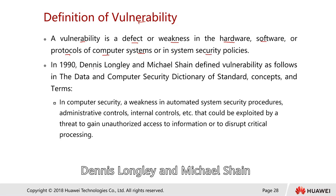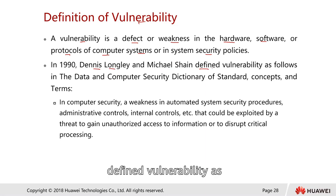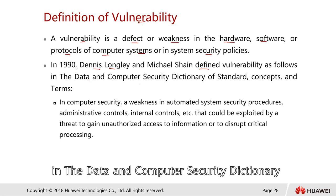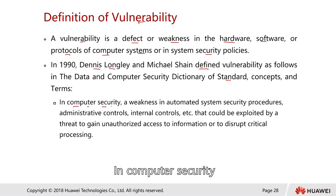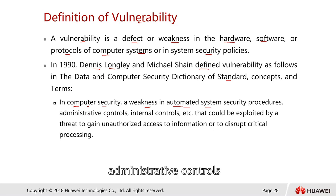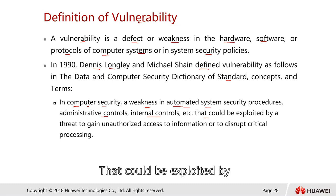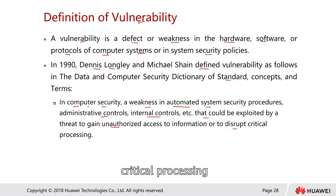In 1990, Dennis Longley and Michael Shane defined vulnerability in the Data and Computer Security Dictionary of Standard Concepts and Terms. In computer security, a weakness is an automated system security procedure, administrative control, internal controls, etc., that could be exploited by threats to gain unauthorized access to information or to disrupt critical processing. This is called a vulnerability.